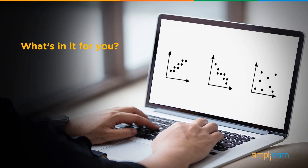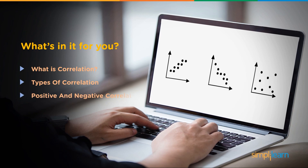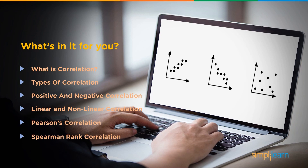We'll start the tutorial by understanding what is correlation. Then, we'll move to discuss types of correlation and discuss each of them one by one. After that, we'll learn the two major methods to calculate correlation coefficient — that is Pearson's correlation and Spearman's rank correlation. So, let's get started.